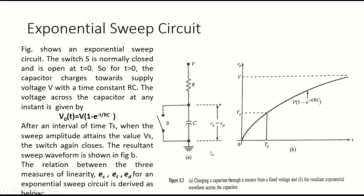Let's move to the exponential sweep circuit. As you can see, this is a simple circuit having a resistor and capacitor connected towards a switch, with a supply voltage V, where the sweep voltage is the voltage across the capacitor V0. The figure shows an exponential sweep circuit in which the switch is normally closed and will be open for T greater than 0.